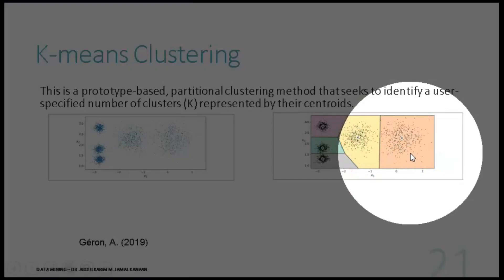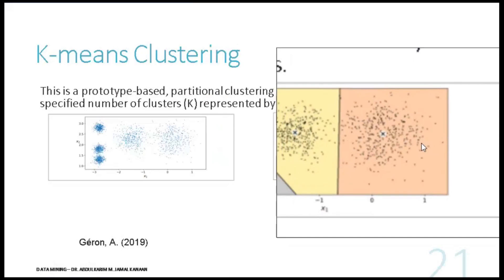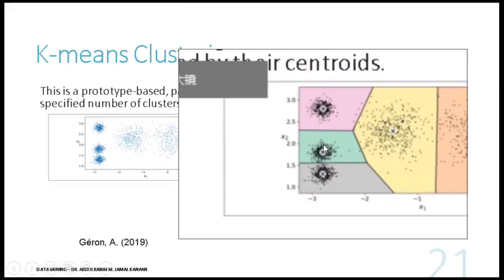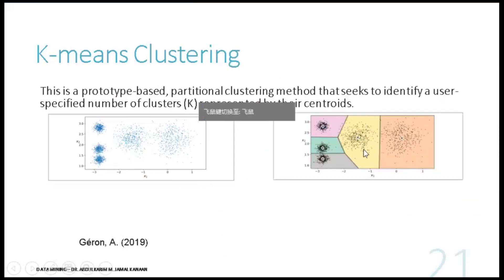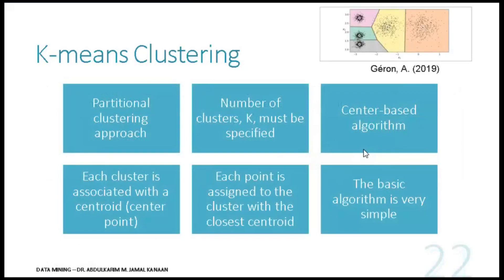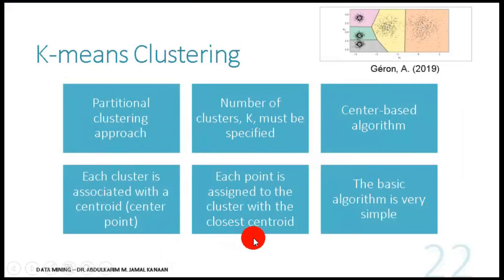K-means is partitional and requires you to specify the number of clusters. Each cluster is associated to a centroid, and each point is assigned to the cluster with the closest centroid. K-means measures how far each data point is from the centroids, and based on the nearest centroid, assigns that particular point to it. It is a basic and very simple algorithm.